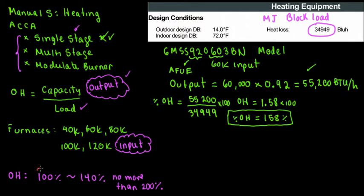1.58% is not within what Manual S recommends, because Manual S recommends from 100 to 140, no more than 200. What would be the other option? This is a 60K furnace. What if we go for a lower value? A lower value would be option two. Let's put the other model: GMSS920402BN. These furnaces are discontinued, by the way.